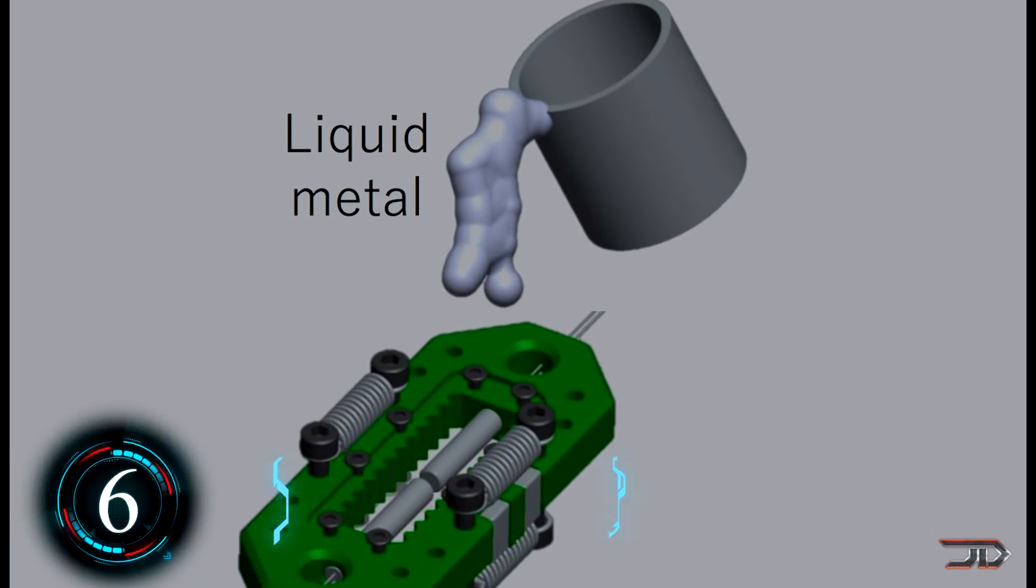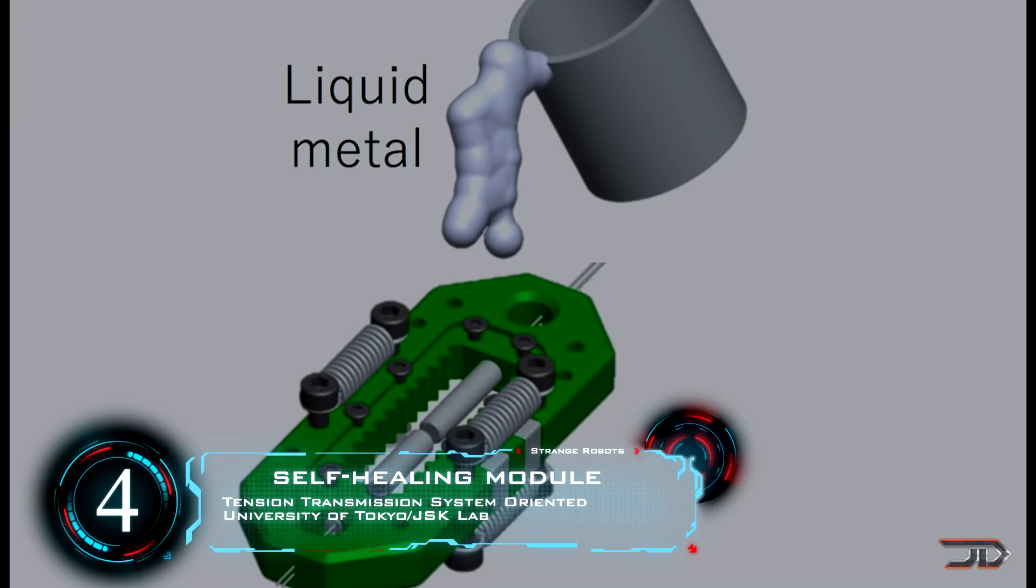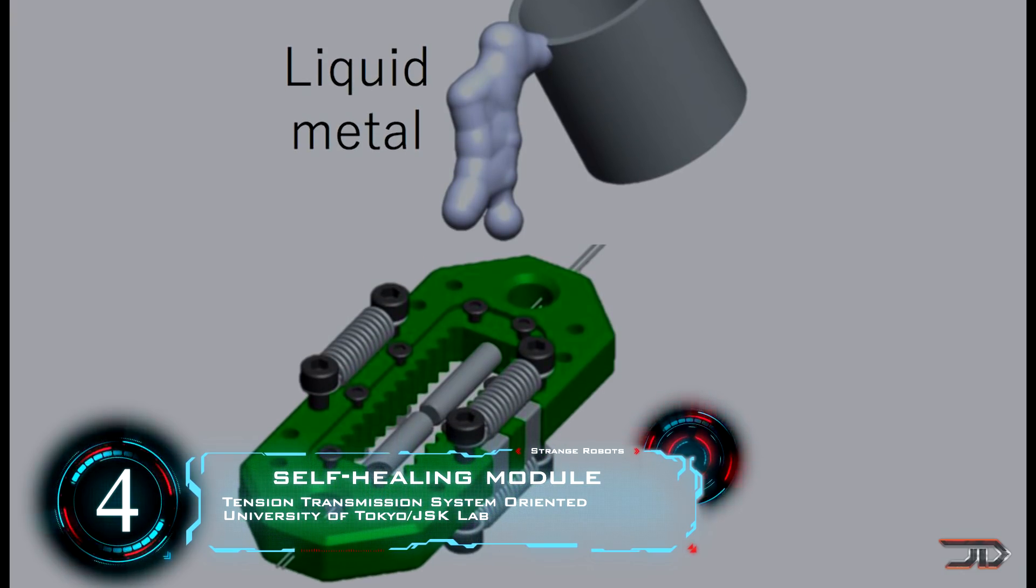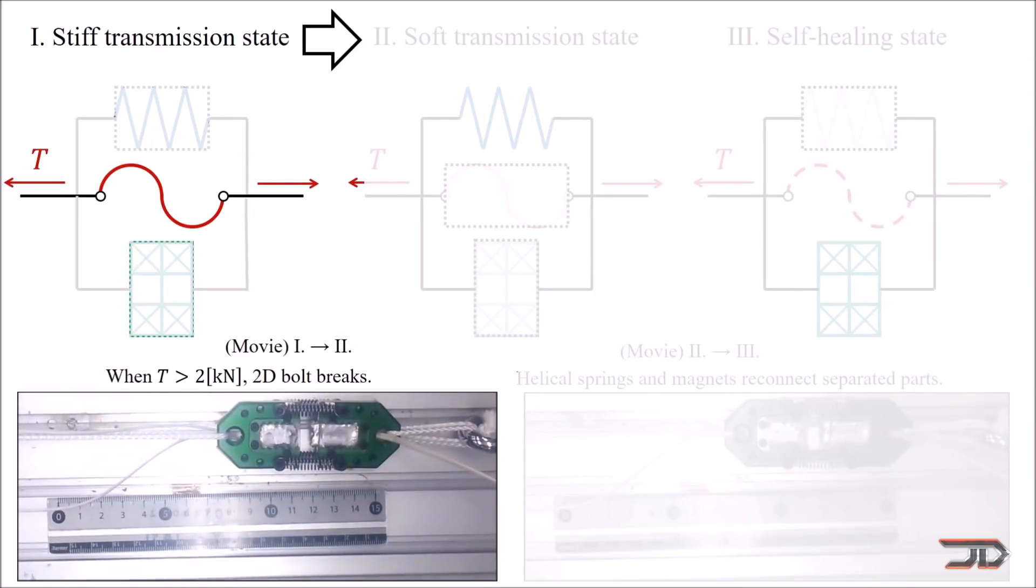Now we reach number 4, and we always have to have some sort of reference to the T-1000, so here it is, liquid metal. Maybe we should blame James Cameron for giving people ideas on how to build robots, but then again, this thing is definitely unique.